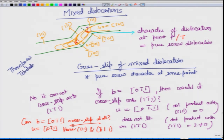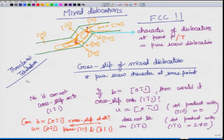Thomson's tetrahedron gives all the possible planes for the FCC system — and I should clarify that this cross slip discussion is implicitly about FCC, since all the directions and planes shown are FCC slip systems. Cross slip is also possible in BCC, but the planes and directions would be different. For BCC and HCP we do not have a tool as handy as Thomson's tetrahedron, but once you understand the concept and mathematics you can find the directions and planes easily.